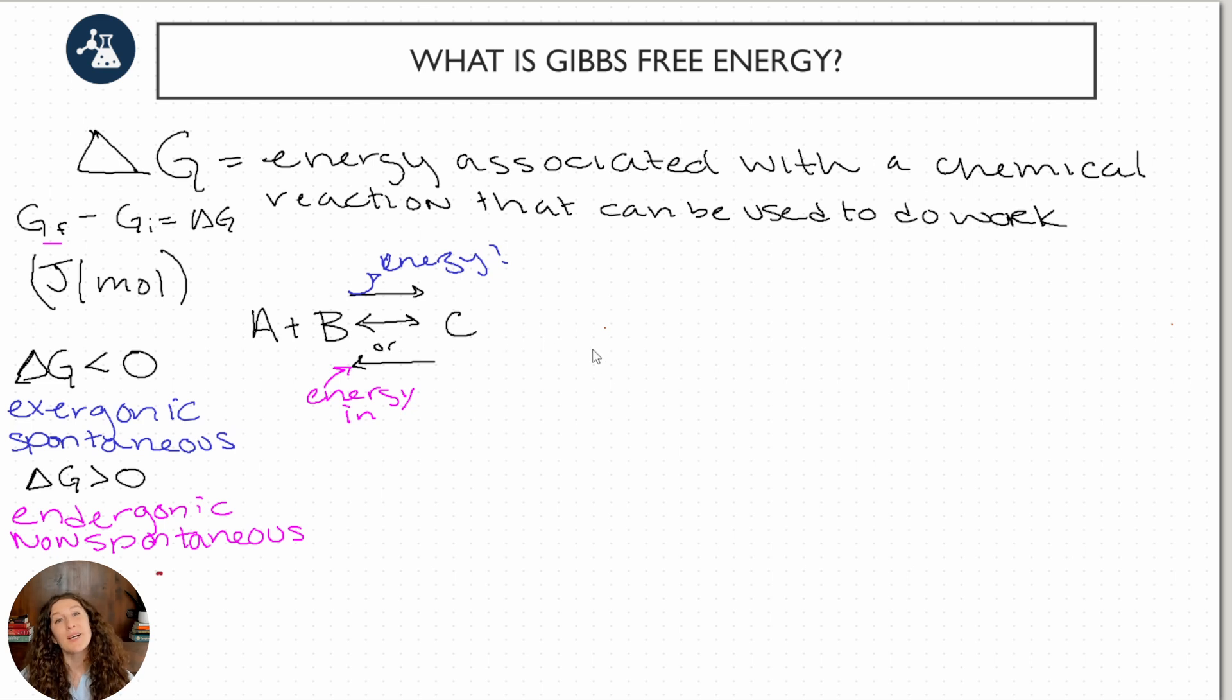So there's this big equation that connects delta G to enthalpy and entropy. And it's as follows. Delta G is equal to delta H, or enthalpy, minus temperature times delta S, or entropy, or measure of disorder. And so we want to connect this idea of enthalpy and entropy to delta G in our concept of spontaneity. And so the easiest way to do this, in my opinion, is to make a little chart, because then we'll walk through each example.